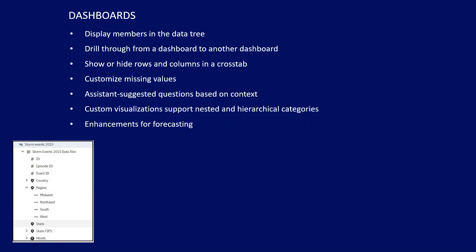There is an assistant that suggests questions based on context — that's part of the AI push IBM has been doing with the product. Cognos Analytics integrated AI with Cognos in the 11.1 release; the Exploration section never even existed before 11.1. IBM is constantly adding more and more AI to each iteration.